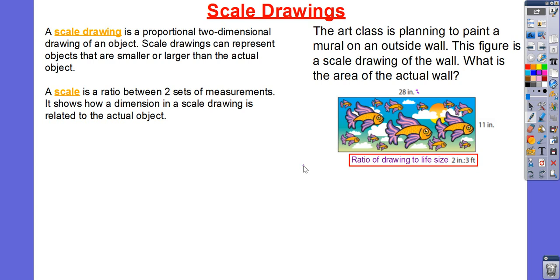A scale drawing is a proportional two-dimensional drawing of an object. Scale drawings can represent objects that are smaller or larger than the actual object itself. A scale is a ratio between two sets of measurements. It shows how a dimension in a scale drawing is related to the actual object.